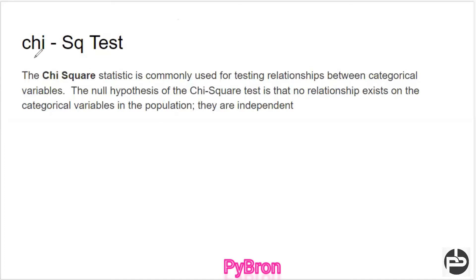Many of you will get confused about which kind of testing we have to perform at which moment. Don't worry about all those things. We will give the conclusion of all those pointers. I found some questions in the comment section asking what kind of testing to perform at which moment — they understood Z-testing, T-testing, and Chi-Square testing conceptually. You will get to know in a while. No doubt at all, no worries. We will give complete answers at the end of this session. So first we will understand Chi-Square testing.